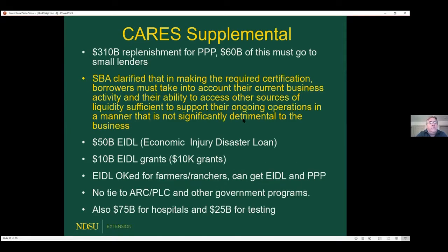The next thing is the CARES supplemental legislation signed into law this morning — the Paycheck Protection Program and Health Care Enhancement Act. They added more money into the CARES Act: the $349 billion PPP program ran out of money, so another $310 billion was added, with $60 billion of that required to go to small lenders. The intent is that smaller lenders lend to smaller businesses, so mom-and-pop operations that got shorted last time can get funding.